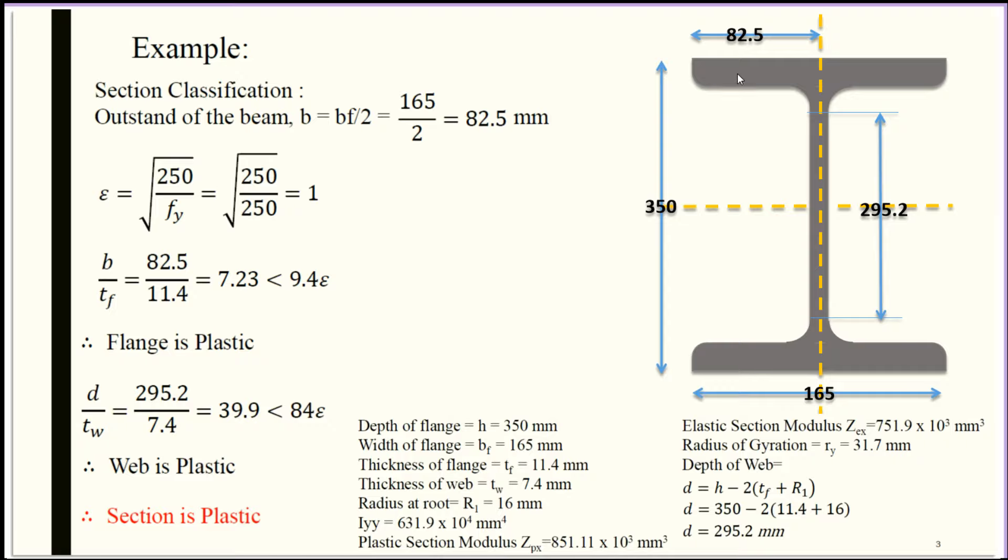When we want to consider the actual depth of web, we take the total depth 350 mm and subtract the thickness of both flanges and the radius at curve. After reducing that, we get 295.2 mm, the effective depth of the web. First ratio: B = BF/2 = 165/2 = 82.5 mm.